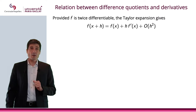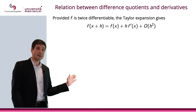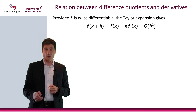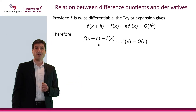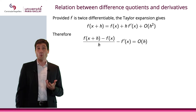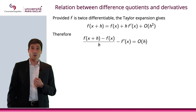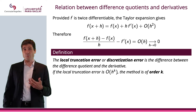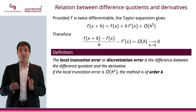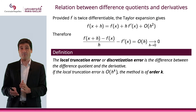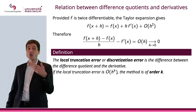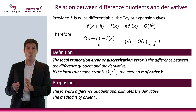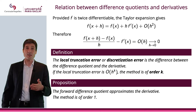Now, if f can be differentiated twice, what we have is that f(x+h) = f(x) + h·f'(x) + O(h²). What this means is that [f(x+h) − f(x)] / h − f'(x) = O(h), which goes to zero as h goes to zero. What we will define is the local truncation error, or discretization error, which is the difference between the difference quotient and the derivative. A local truncation error of O(h^k) means the method is of order k. The forward difference quotient approximates the derivative with order 1.